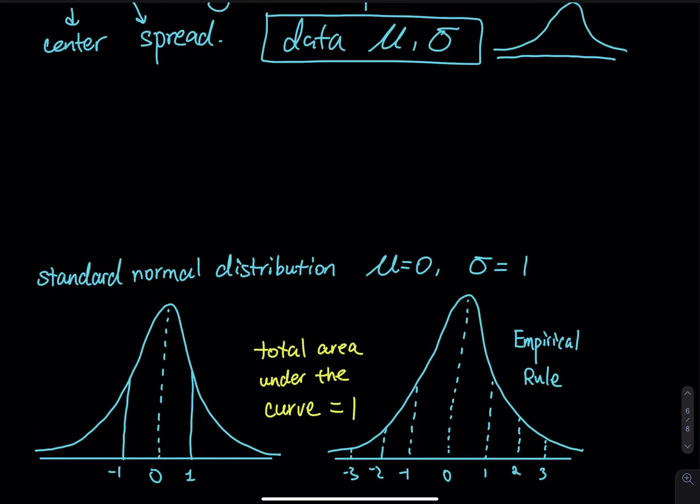The mu is equal to zero. Sigma is equal to one. And they are always zero and one. So the center is not shifting anymore. And the spread is not shifting anymore. So that, we call that standard normal distribution. Mu is equal to zero. Sigma is equal to one. We have a fixed bell curve.